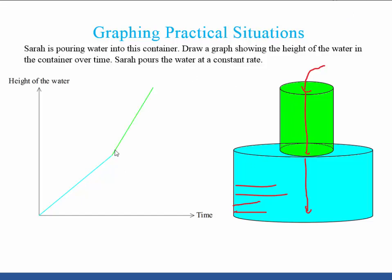So you can see I've got now the next part of my graph. So my blue one is the large cylinder. And my green one, because the height of the water is increasing at a much faster rate because the cylinder is smaller, I have a straight line graph which has a higher gradient. So this line is much steeper.